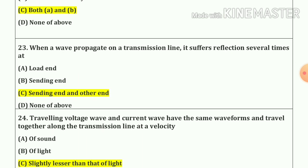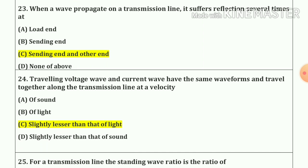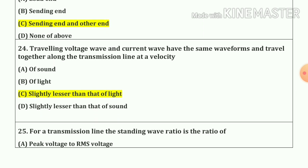Question number 23. When a wave propagates on a transmission line it suffers reflection several times at the sending end and the other end. Question number 24. Travelling voltage wave and current wave have the same waveform and travel together along the transmission line at a velocity slightly less than the speed of light.